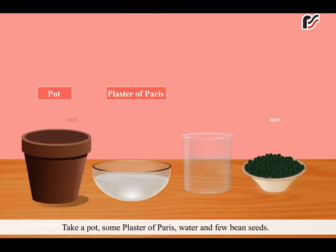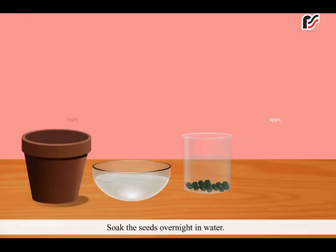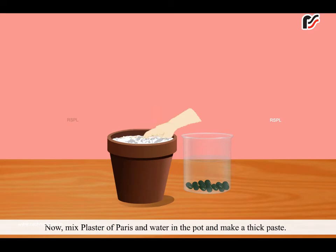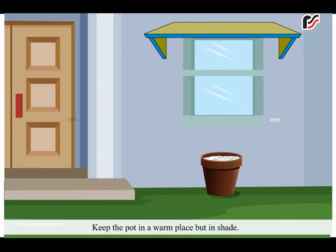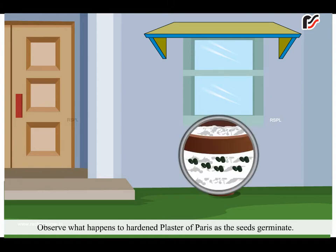Let us do an activity. Take a pot, some plaster of paris, water and a few bean seeds. Soak the seeds overnight in water. Now mix plaster of paris and water in the pot and make a thick paste. Plant the seeds before the plaster hardens in such a way that they lie 1 cm below the surface of plaster. Keep the pot in a warm place but in shade. Observe what happens to hardened plaster of paris as the seeds germinate.